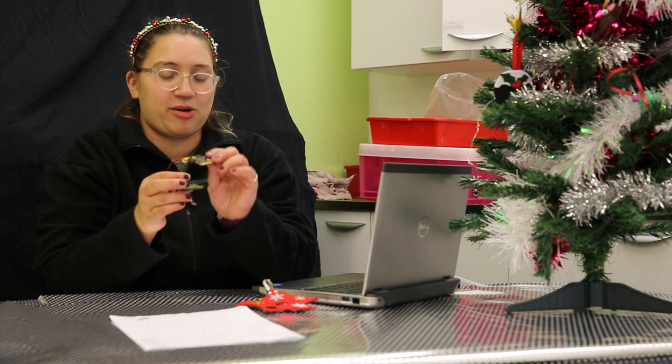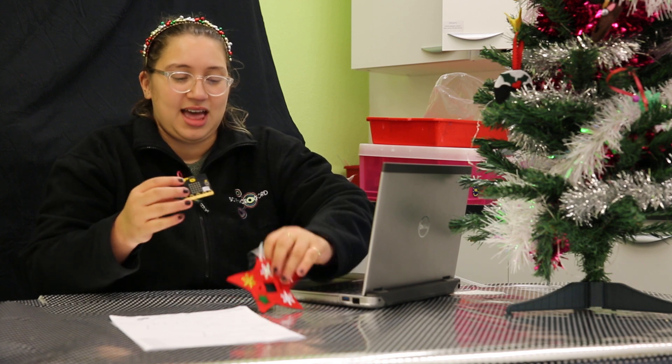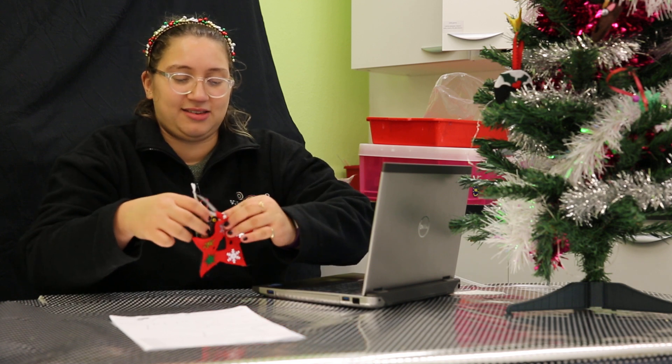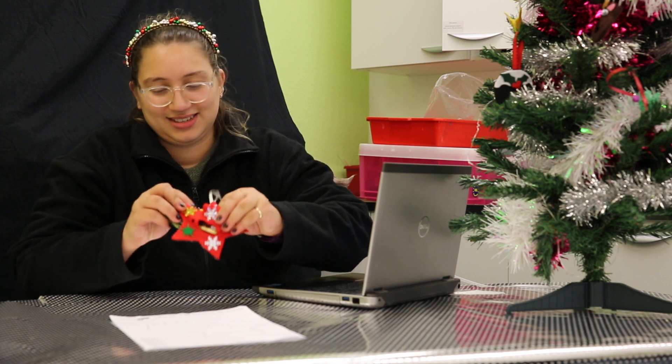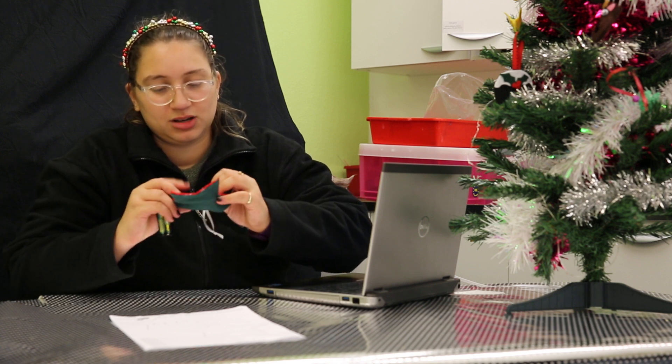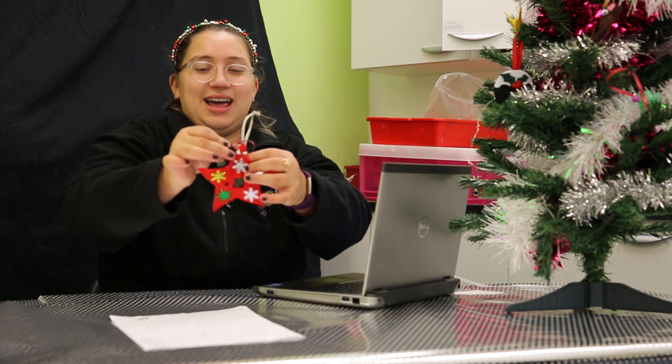Next, you're going to need your micro:bit and your battery pack with batteries in it, of course. And you can slide it in so that it shows through the felt appropriately.